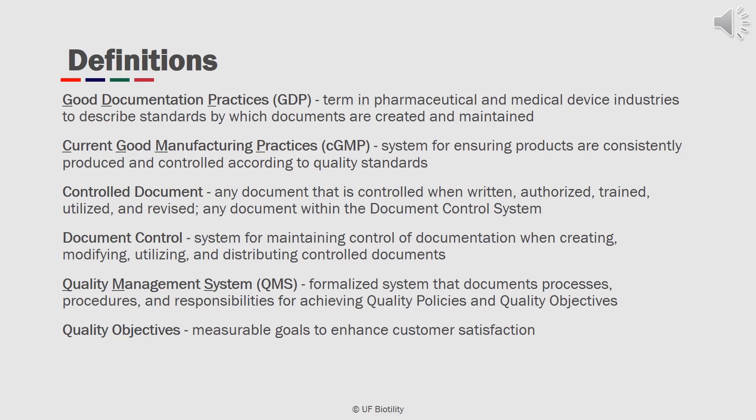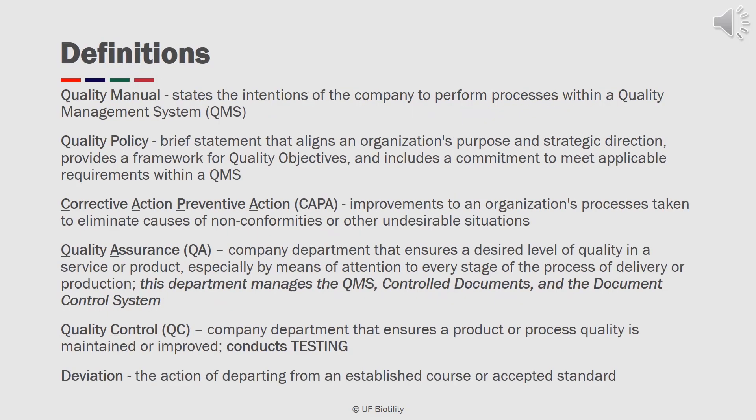A quality management system is a formalized system that documents processes, procedures, and responsibilities for achieving quality policies and objectives. Quality objectives are measurable goals to enhance customer satisfaction. The Quality Manual states the intentions of the company to perform processes within a quality management system. The Quality Policy is a brief statement that aligns an organization's strategic direction, provides a framework for quality objectives, and includes a commitment to meet applicable requirements. A corrective action, preventive action, or CAPA, are improvements to an organization's processes taken to eliminate causes of non-conformities or other undesirable situations.